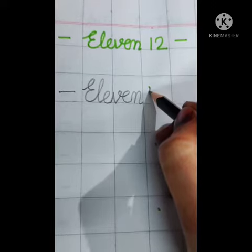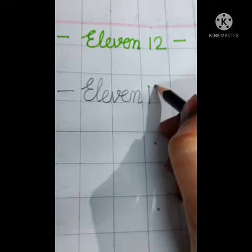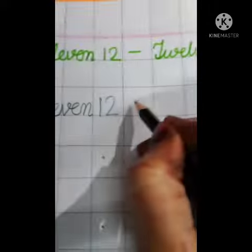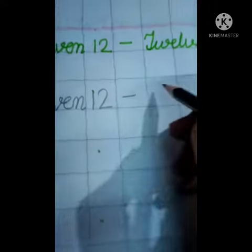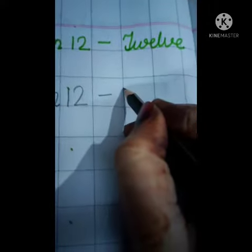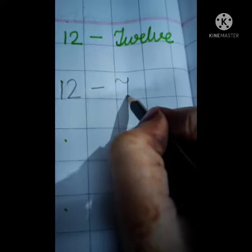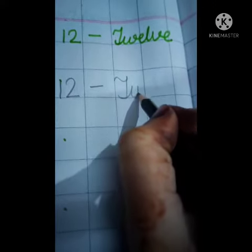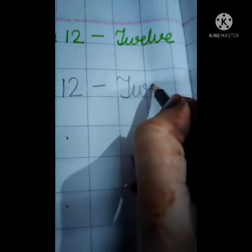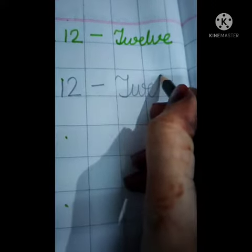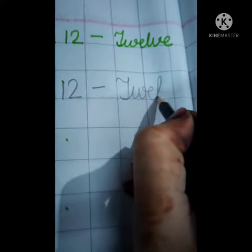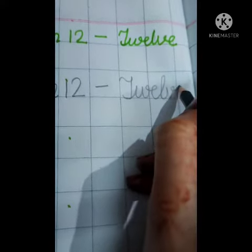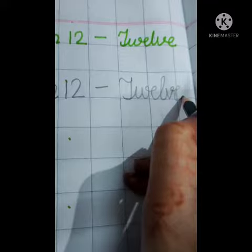Now we will write 12. Write here number 12. Write the spelling of 12: T-W-E-L-V-E, 12.